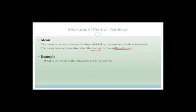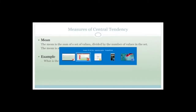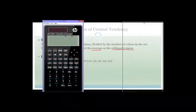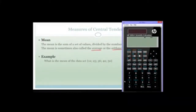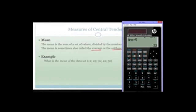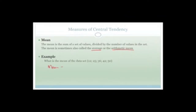So the mean is the sum of a set of values divided as an average. Let's show how you would get your mean. There are five numbers here. I'm going to go 12 plus 25 plus 36 plus 42 plus 50, equals, and then divide by 5. You'll see the mean — my average — is 33. So the mean for this data set is 33.